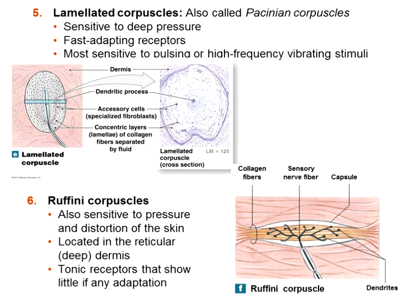Laminated corpuscles — your deep ones giving deep pressure and deep touch — are the Pacinian corpuscles. They are fast adapting, specialized like a little onion cell tied to an embedded neuron with a dendritic process. They are most sensitive to pulsing or high-frequency vibrations and are fast adapting.